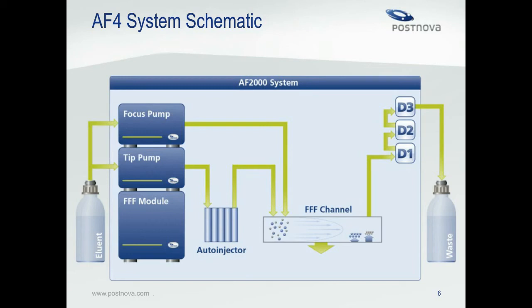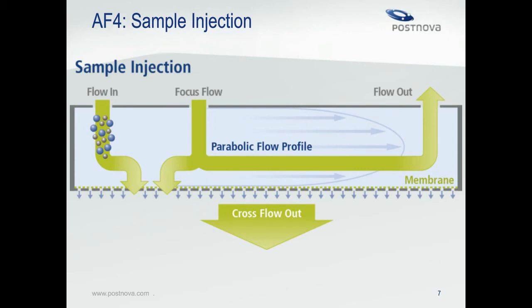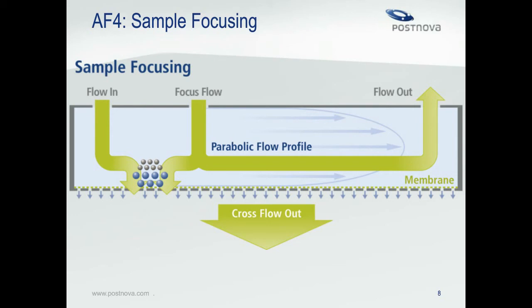Moving to the right across the diagram, we see the FFF channel where separation occurs, and small boxes D1 to D3 represent the various detectors which can be coupled to FFF. After flowing through the detectors, the sample flows to waste or can be collected in fractions for offline analysis such as microscopy. When a sample is first injected into the FFF channel, it flows in via the tip pump. At the same time, the cross flow pushes the sample towards the channel bottom. The focus pump works counter to the tip pump to prevent the particles from eluting right away. This is called the focusing step, which puts the sample particles essentially on a starting line, countering diffusion up or down the length of the channel during injection.